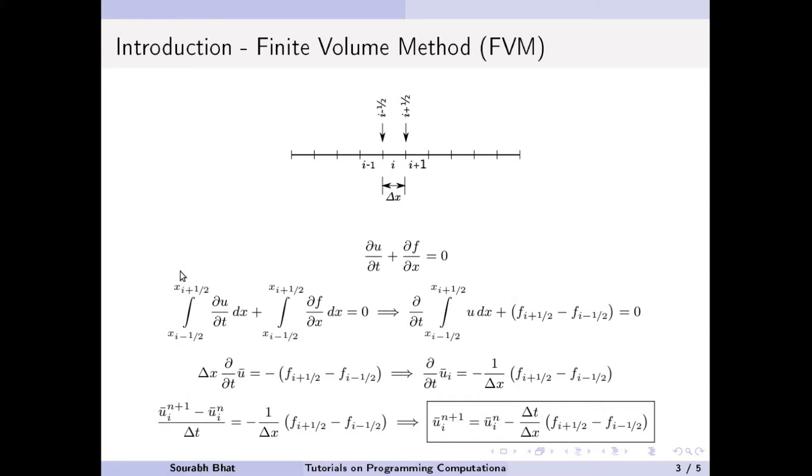To do that, we integrate this equation over the domain, basically over that small cell. When we do that, this particular term here can be written by taking out the time derivative and keeping the rest inside the integral. However, the other term simplifies easily because we have a space derivative here. Taking an integral over a space derivative keeps the variable and we apply the limits from x i minus half to x i plus half, and we end up with f i plus half minus f i minus half.